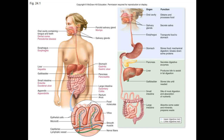The liver produces bile, stored in the gallbladder. Bile is an emulsifying agent that helps break down fats into smaller globules so they can be broken down by lipase. The liver also plays a critical role in neutralizing and breaking down poisons, toxins, and drugs. The bile pigment, made from hemoglobin breakdown products, is added to bile and can back up into blood and skin — that's where you get jaundice, as seen in the first caption of the chapter.